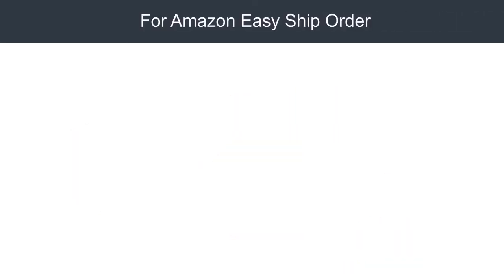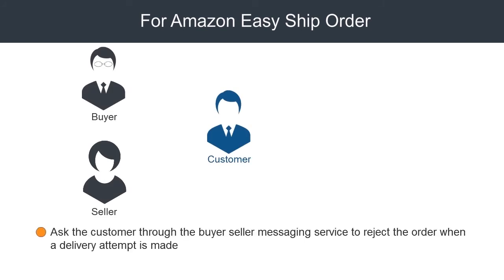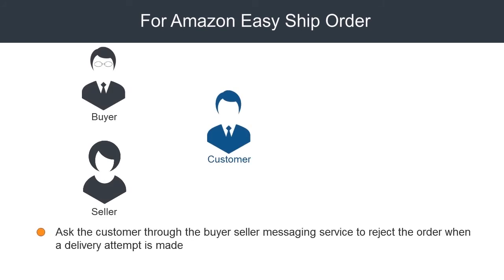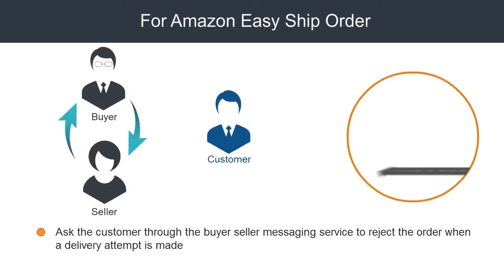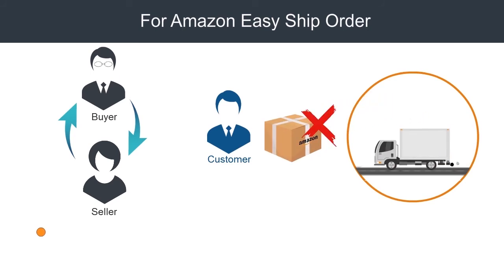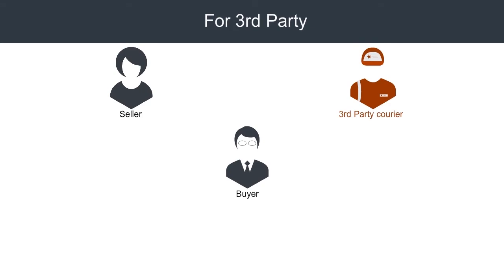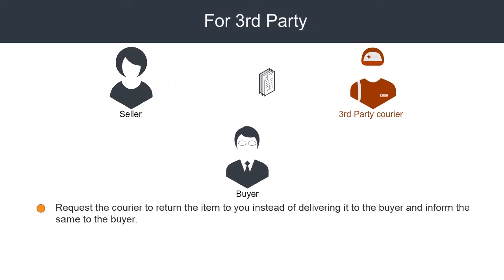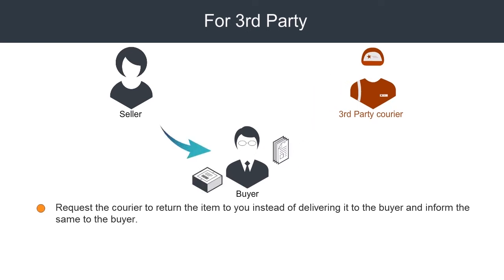For an Amazon Easy Ship order, ask the customer through the buyer-seller messaging service to reject the order when the delivery attempt is made. For orders shipped through a third-party courier, contact the courier service and request for the item to be returned to you instead of delivering it to the buyer. If the courier partner agrees, inform the buyer about the same.